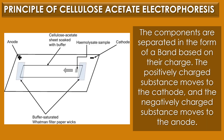The cellulose acetate strip is first wetted in the electrophoresis buffer. Then the sample is loaded onto the strip at approximately one-third of the strip area. The ends of the strip are in contact with the buffer with the help of a filter paper wick. An electric voltage of 6 to 8 volts is applied to the strip for about an hour. The components are separated in the form of bands based on their charges.